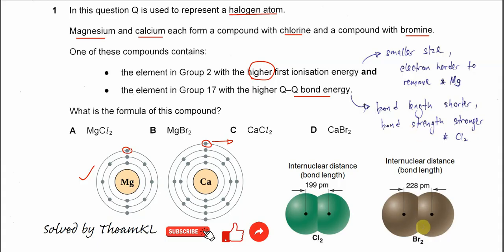Because bromine size is larger, the bond length is longer and it's easier to break this bond. The bond energy is lower, so less energy is needed to break this bond.